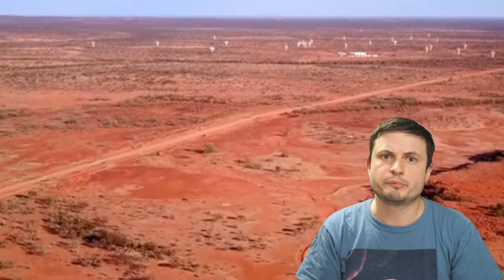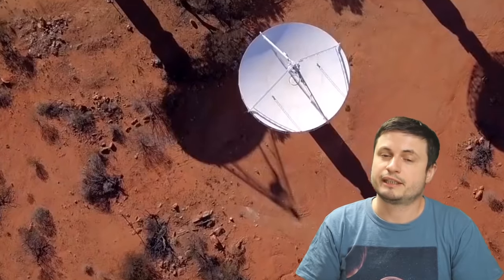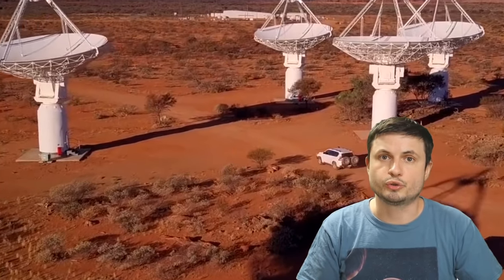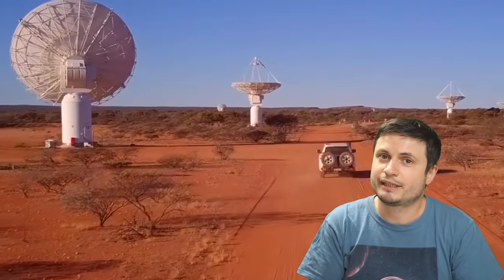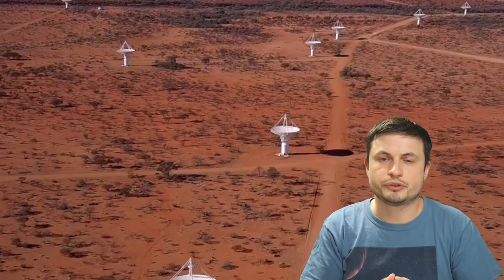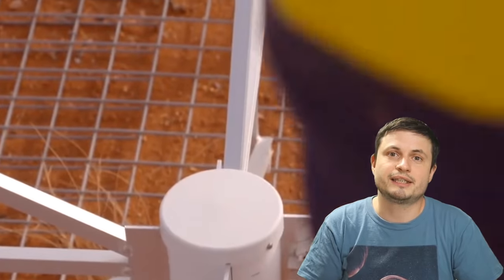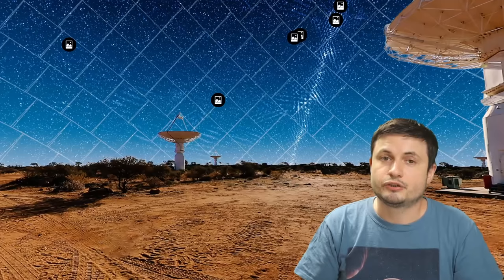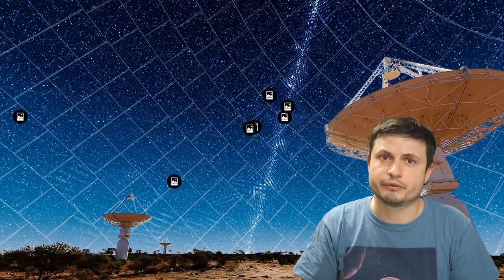But now something even more incredible has been achieved by the scientists working with the Australian Square Kilometer Array Pathfinder telescope that was able to create a map that's absolutely mind-blowing in only two weeks time. Essentially, something that took over two decades before is now possible in under one month. In this particular case, it was also able to discover millions of different galaxies with about a million galaxies previously being completely undiscovered. And to date, this is the most accurate and the most detailed radio map of the entire southern sky.